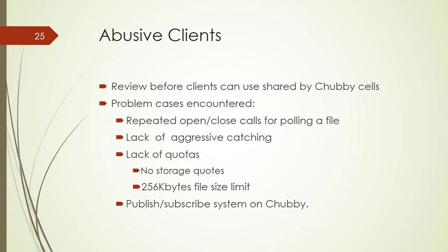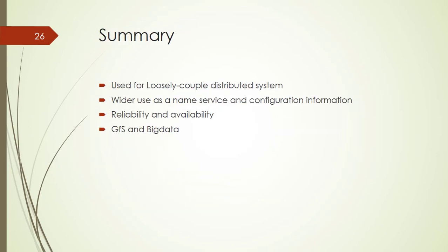There are some problems: the first is lack of aggressive caching — originally we did not appreciate the critical need to cache the absence of files nor to reuse open handles. The second is lack of quotas — Chubby was never intended to be used as a storage system for large amounts of data, so it has no storage quotas, and has a 256 kilobyte size limit. The third is use as a publish-and-subscribe system on Chubby.